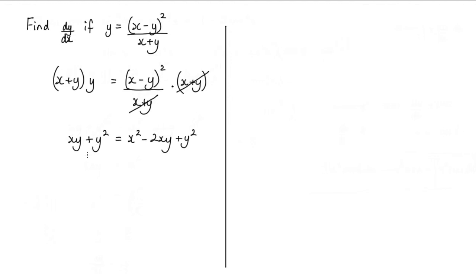Now we should notice that this y squared term will cancel with this one. And we have a negative 2xy here and an xy here. So what we have is 3xy is equal to x squared.